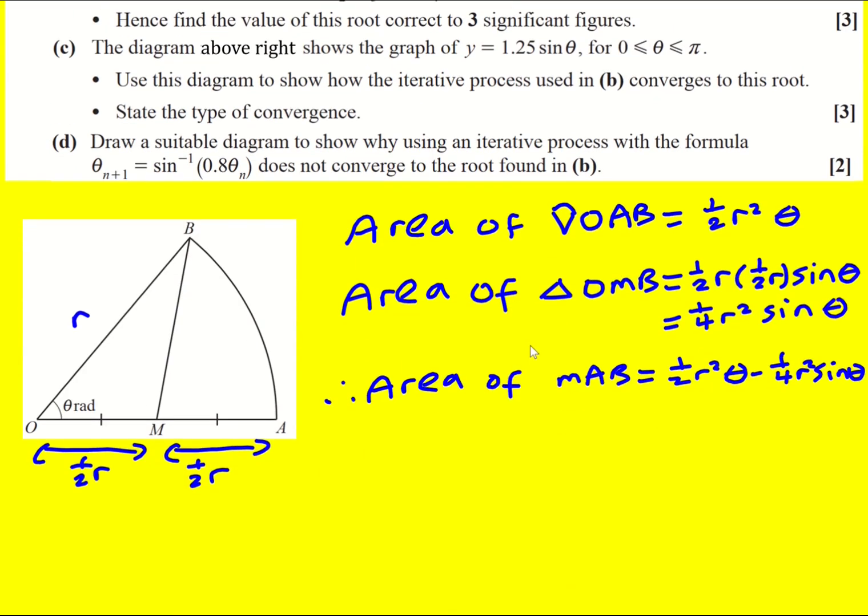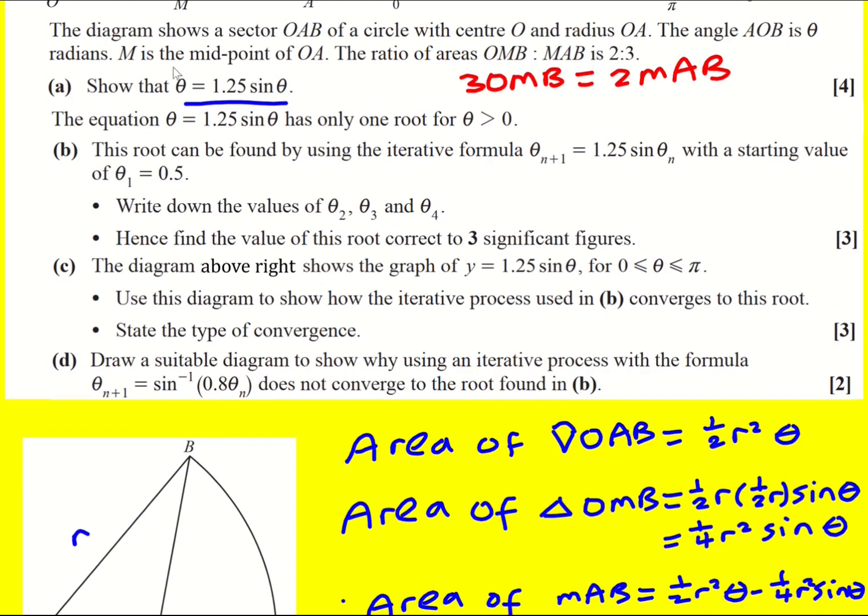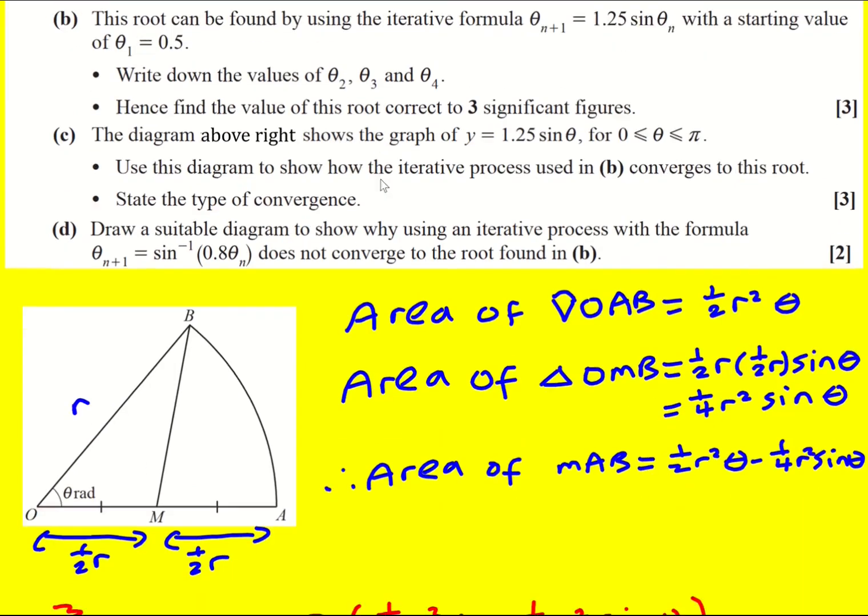So 3OMB, that's going to be three quarters R² sine theta is equal to 2MAB, that's 2 times a half R² theta minus the triangle. Remember we're trying to get to this formula here: theta equals 1.25 sine theta.